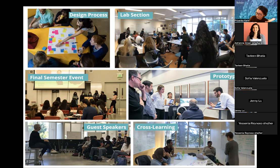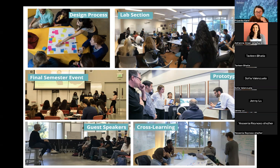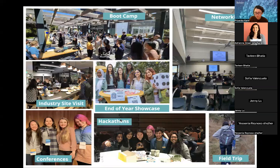Here's a look at what the fellowship might look like inside the classroom — starting with the design process on the upper left corner, where you see a fellow working with sticky notes engaged in the design process. The picture on the right was taken in one of our lab sessions that happens in Shires Hall. Going down, you can see some of the events we hold throughout the year, including final semester events, networking events, hackathons, field trips, and industry site visits. We also have guest speakers come in each semester and many cross-cohort community-building and professional development opportunities such as resume workshops.